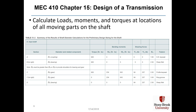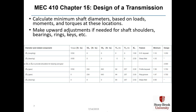Then you get to calculate loads, moments, and torques at locations of all moving parts on the shaft. You need all of this information in order to calculate the minimum shaft diameters. Then, as shown in chapter 12, sometimes you need to make some upward adjustments for shaft shoulders, bearings, rings, and keys.